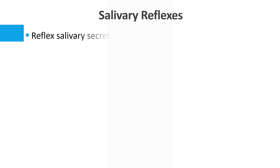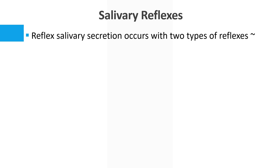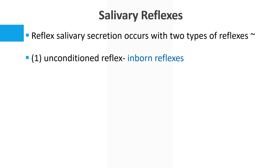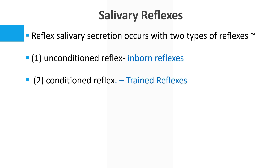Next we can mention salivary reflexes. Whenever we see tasty food there is automatic salivation inside our mouth. Reflex salivary secretion occurs due to two types of reflexes: unconditioned reflexes, which are inborn, and conditioned reflexes, which are trained. A classic example of conditioned reflexes is Pavlov's experiment, in which the scientist Pavlov rang a bell each time he gave food to a dog, so that eventually even the ring of the bell alone caused salivation in the dog.